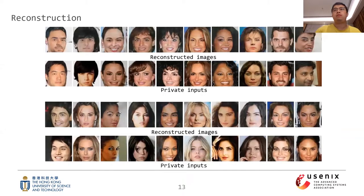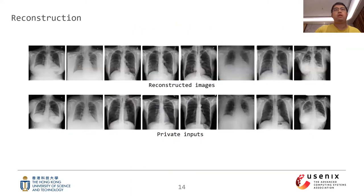Here we present some face photos reconstructed using our approach. The first and third rows are reconstructed images; the second and fourth rows are the corresponding private inputs. The reconstructed images are of high quality and mostly consistent with the private inputs — for instance, the reconstructed images and the private inputs have the same gender, face color, orientation, and facial expressions. This next page shows some chest X-ray images, where the reconstructed images are also highly consistent with the user private inputs.